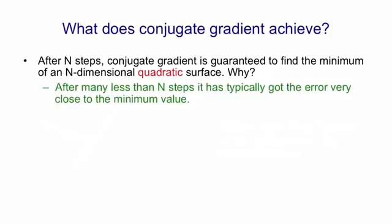More importantly in many less than n steps on a typical quadratic surface it will have reduced the error very close to the minimum value and that's why we use it. We're not going to do the full n steps. That would be as expensive as inverting the whole matrix. We're going to do many less than n steps and we're going to get quite close to the minimum.